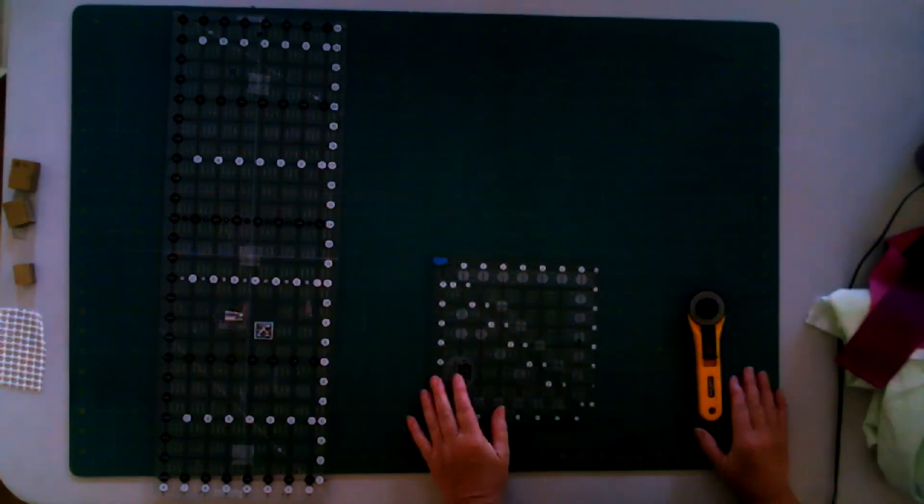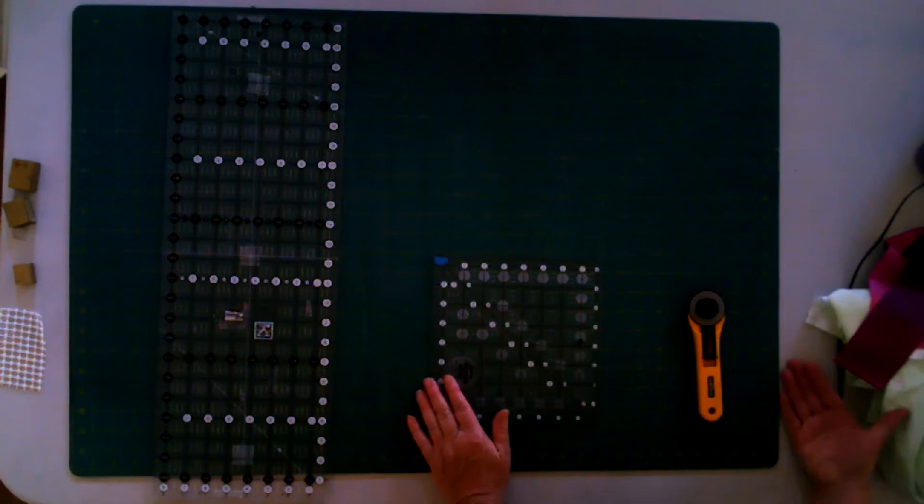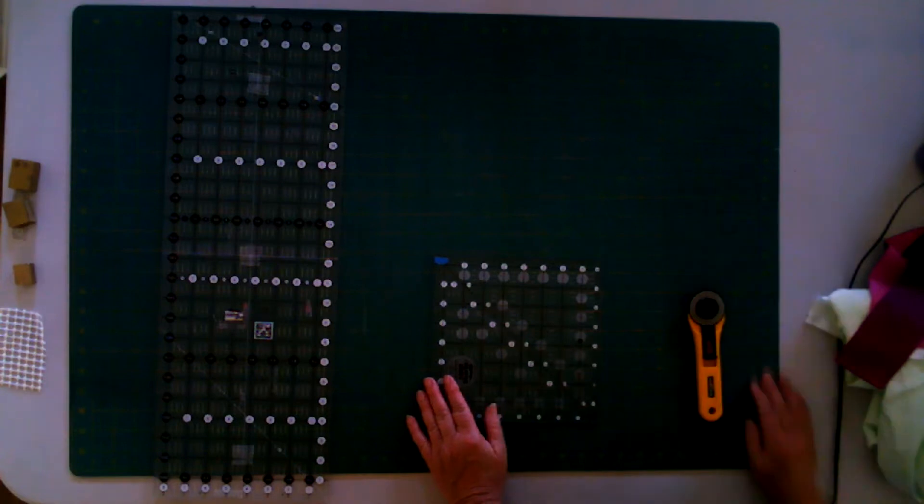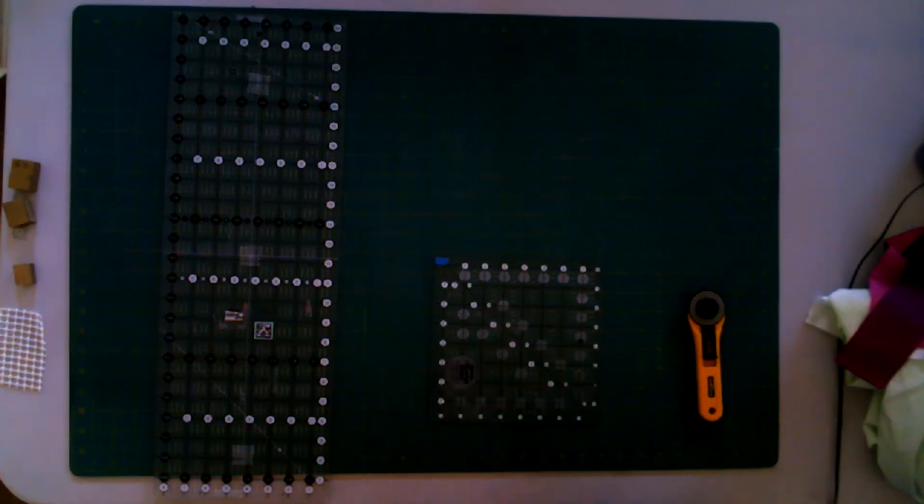First of all, let's look at my cutting board. My cutting board is 35 by 23 inches, a nice size, and I sort of recommend that size.